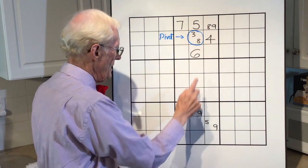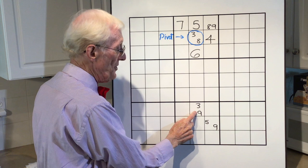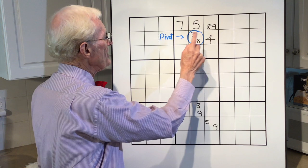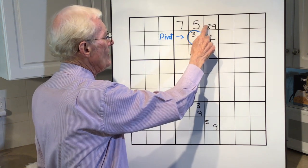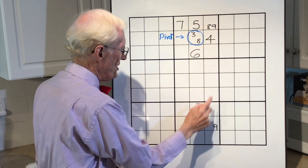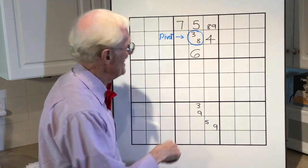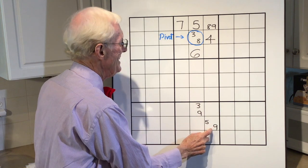If this is a 3, this becomes a 9. And therefore, that cannot be a 9. Now, if this is an 8, that 8 goes, this becomes a 9. And this still cannot be a 9. So in both cases, this cannot be a 9.